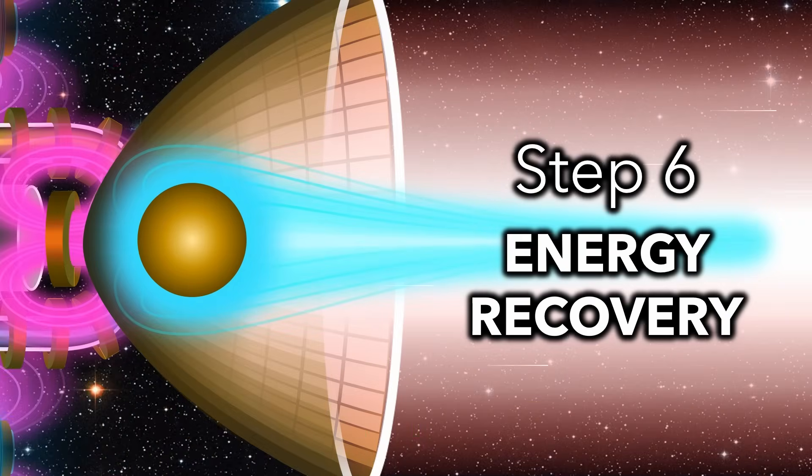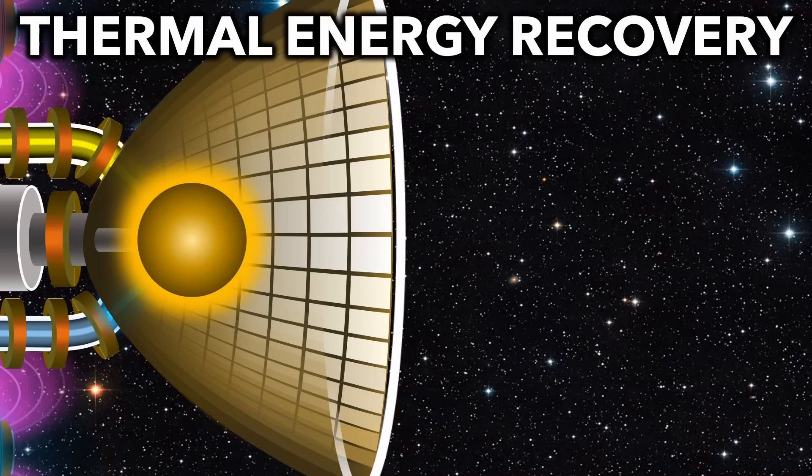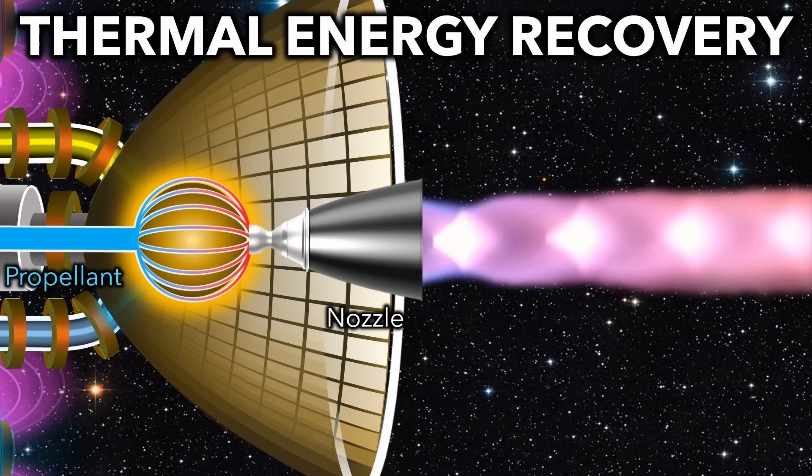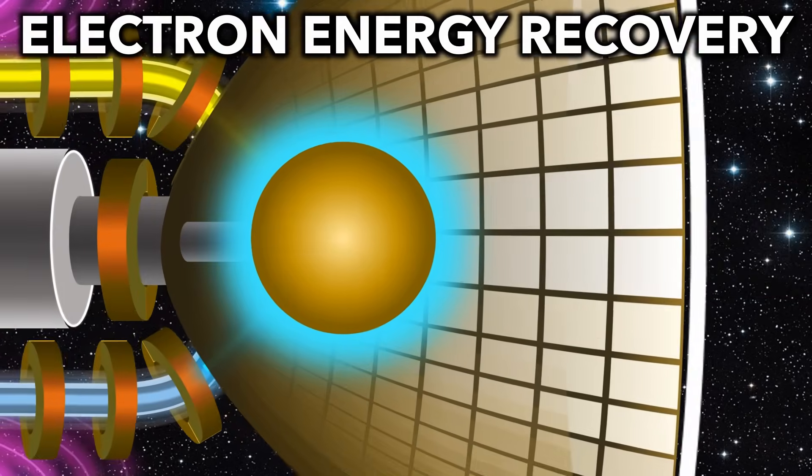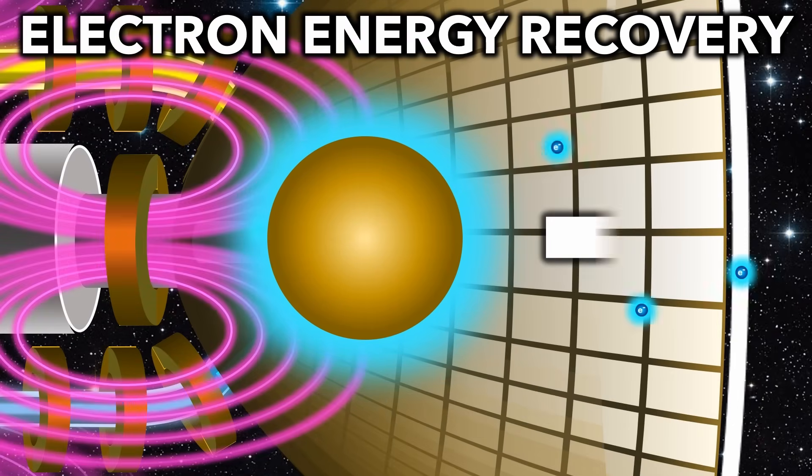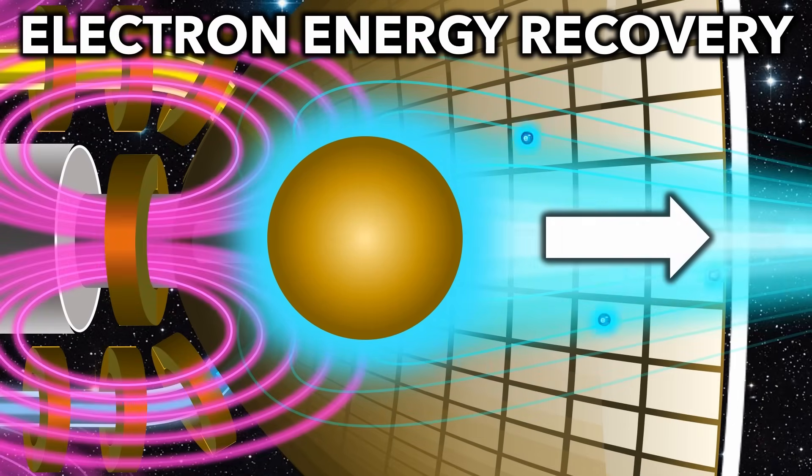Step 6, Energy Recovery. If most of the lost energy is heat, we could use it to heat a propellant and fire it out of a nozzle, very much like a traditional rocket. But if most of the energy is lost as scattered electrons, we could use a magnetic field to reflect the electrons backwards and generate thrust.